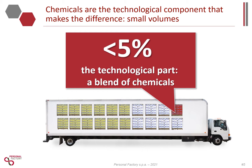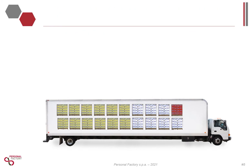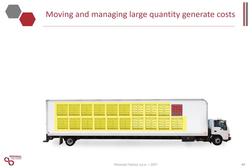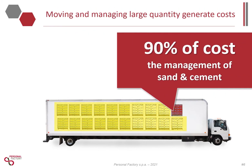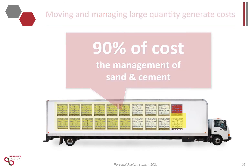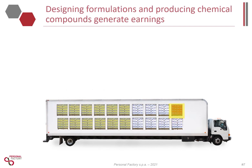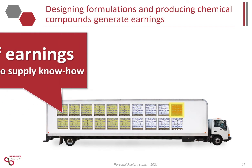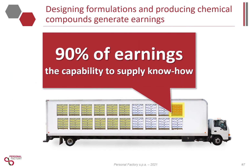The logistics to move sand and cement to the plant, the space to store it, and the logistics to distribute dry mix worldwide generate 90 percent of the industrial costs. But the earnings — the margins — come from chemicals and from the capability to develop and maintain a large product portfolio.